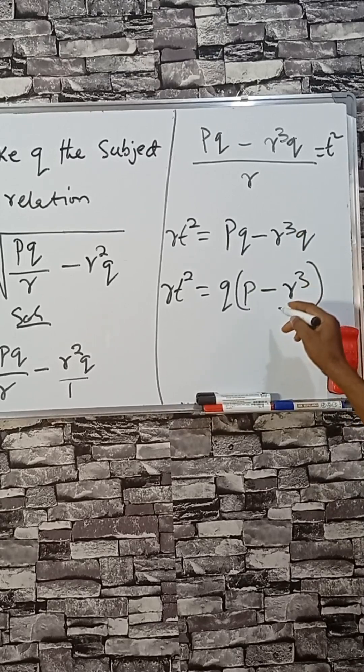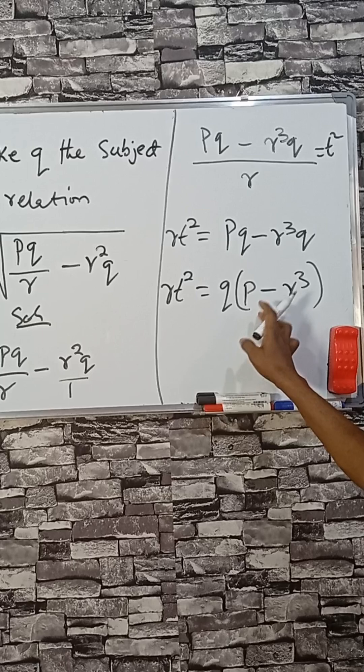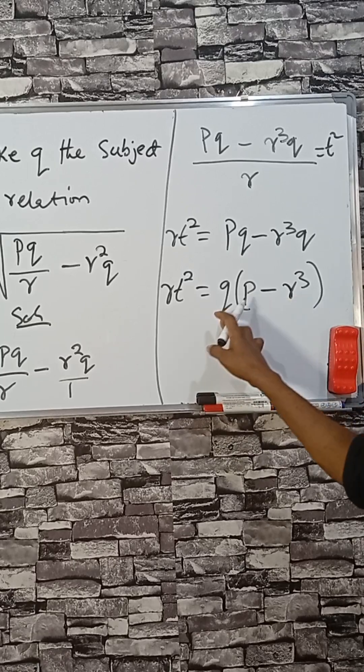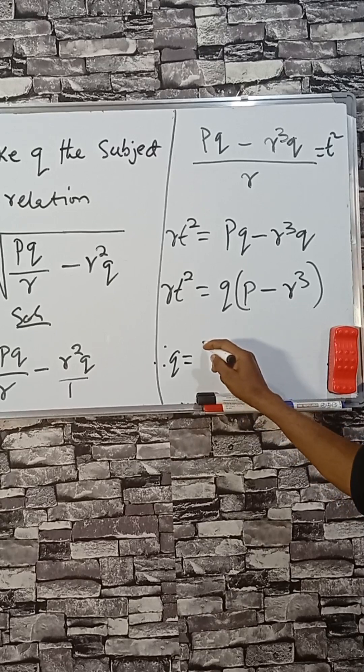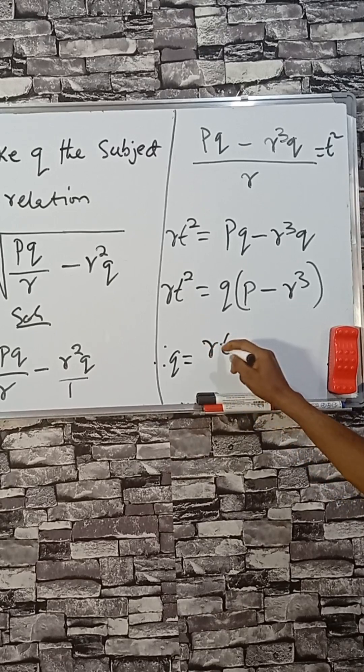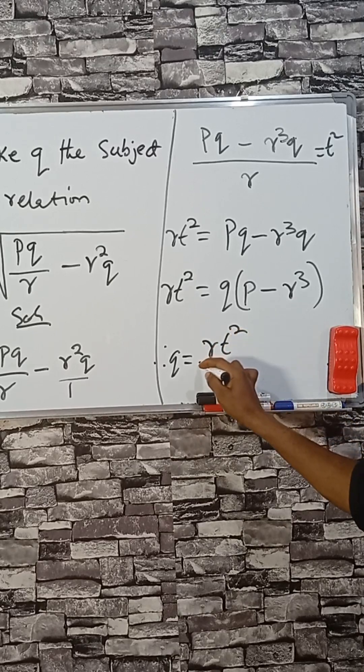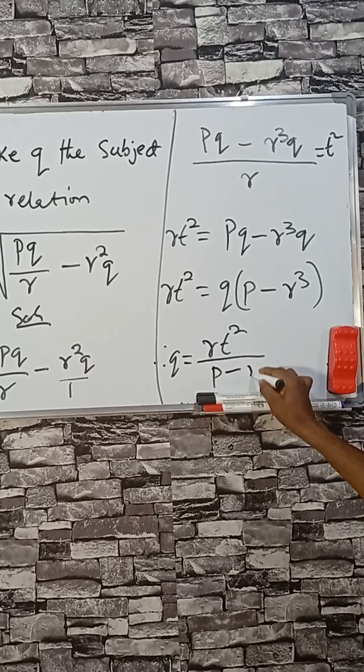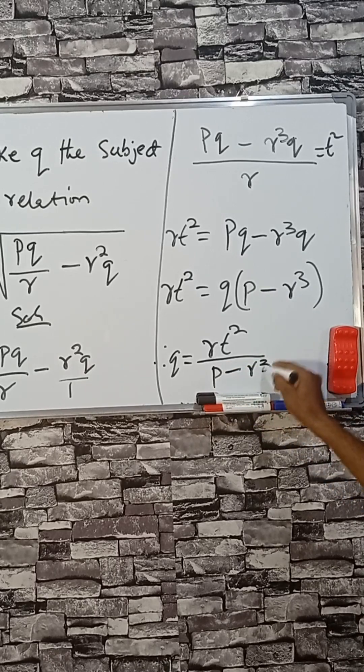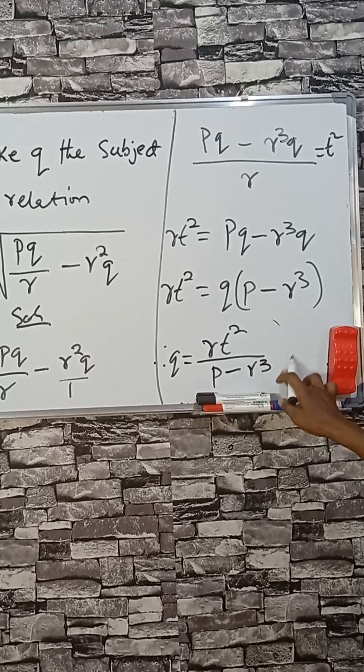cube. Then if we divide both by p minus r cube, q stands outside. Therefore our q equals to r t squared divided by the bracket p minus r cube. This is the answer.